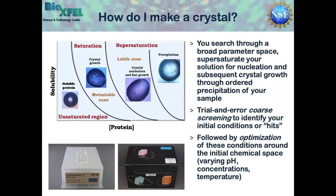How do you go about making a protein crystal? You have to search through a broad parameter space of many different crystallization conditions that have been productive before. As Diana explained, you want to push your protein solution into the supersaturation state where you can have nucleation events and move into the metastable zone where your crystal slowly grows over time — but it is a trial-and-error approach. You're doing coarse screening across many different conditions to identify initial hits, whispers of crystals, that you can then follow up with optimization techniques. Most precipitant solutions include a buffer, pH, salts, and molecular weight agents.